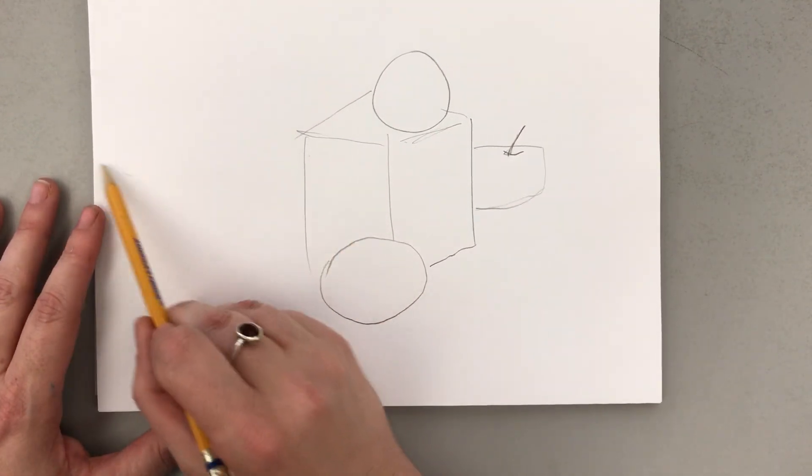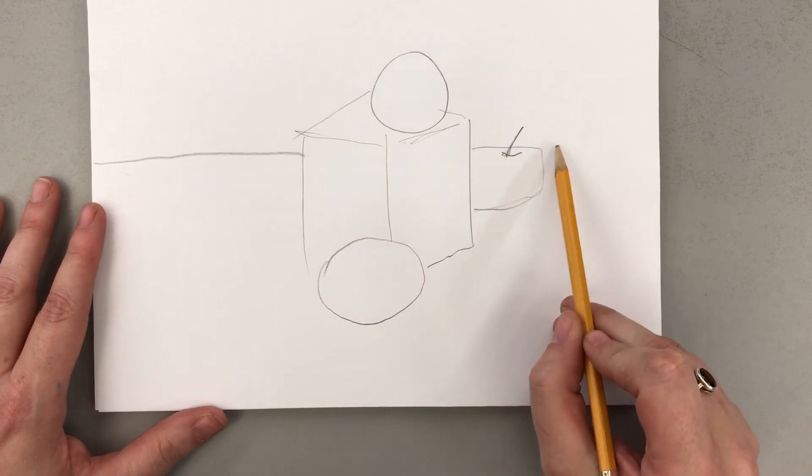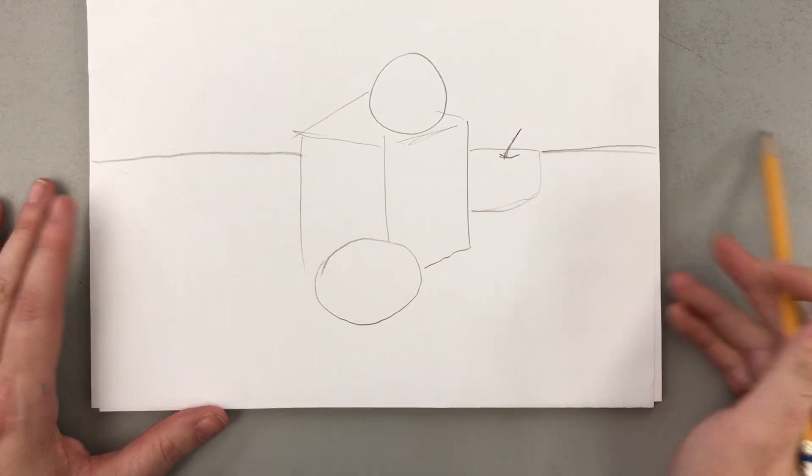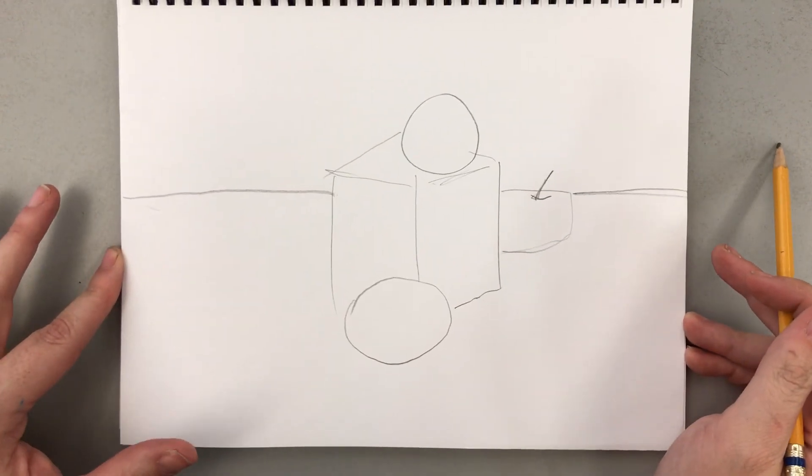At the very end when you're done drawing the items that you like, add the table line last coming into a sketch like that.